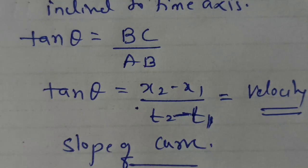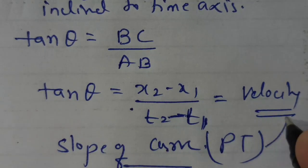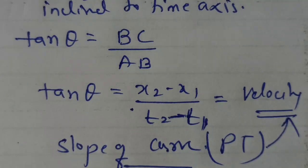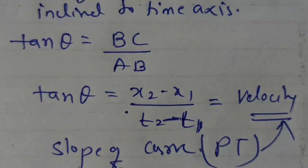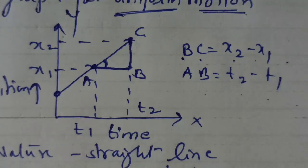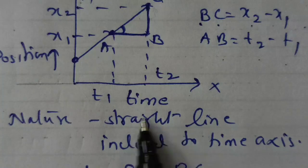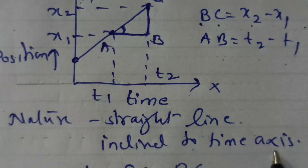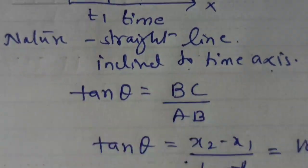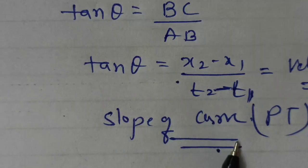So the slope of the PT curve gives us velocity. In exam questions, if asked to find the slope of the curve, use this method. If asked for the nature of the graph, say: straight line inclined to the time axis. If asked what the curve gives, say: the curve gives us velocity.